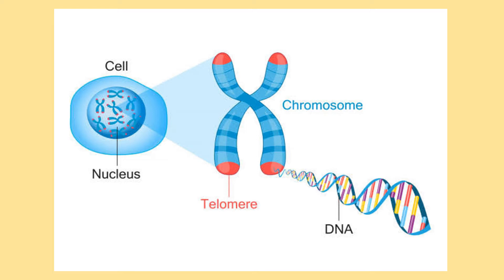In human beings, every cell consists of 23 pairs of chromosomes. Chromosomes always occur in pairs, and inside the chromosome there is a special structure called DNA. The genes are located on this DNA and are responsible for our characters. In sex determination also, these factors play an important role.